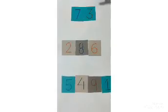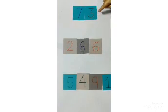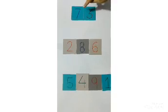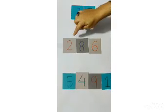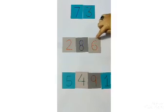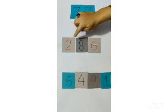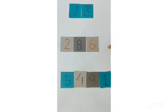For example the numeral 73. Here the numeral is made up of 2 digits, 7 and 3, and we read it as 73. Next example 286. The numeral is made up of 3 digits, 2, 8 and 6, and it is read as 286.